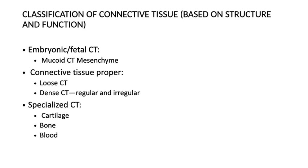Classification of connective tissue: connective tissue is classified as embryonic (mucoid connective tissue) and connective tissue proper, which is further classified as loose and dense. Loose connective tissue has loosely arranged fibers; dense has densely arranged fibers. Dense connective tissue is further classified as regular — where collagen fibers are packed densely and in an orderly manner, example: tendon — and irregular — where collagen fibers are packed densely but irregularly arranged, example: dermis of the skin. Specialized connective tissue includes cartilage, bone, and blood.